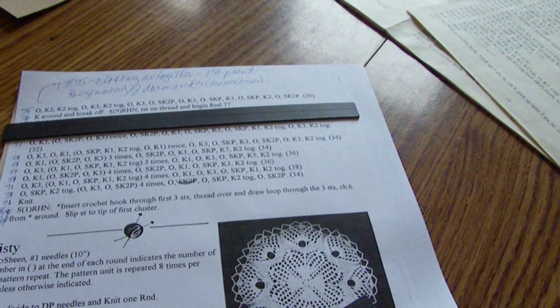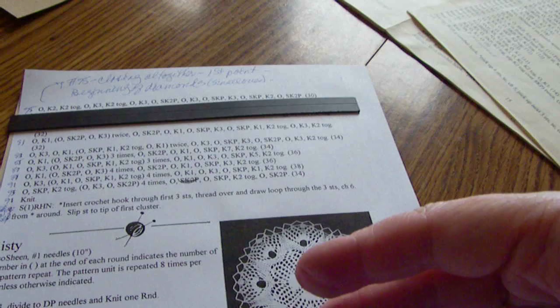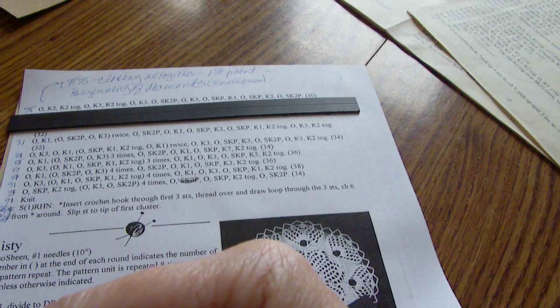Right now I'm about halfway through round 77 and I'll be showing you how you can read your knitting as you go along this round. Okay, right now I'm on the yarn over knit three yarn over slip knit two together and pass it over.